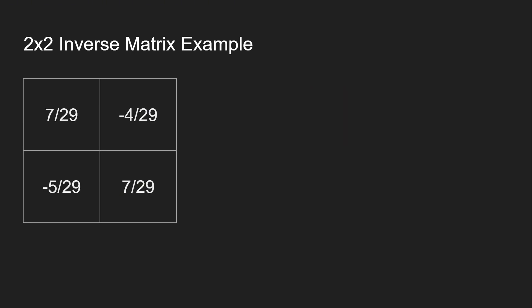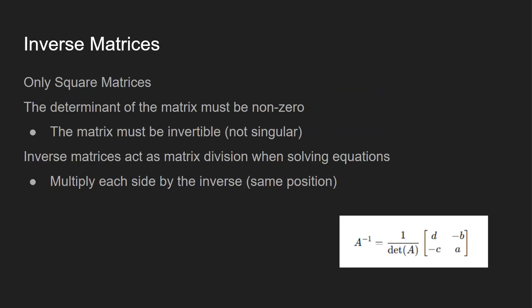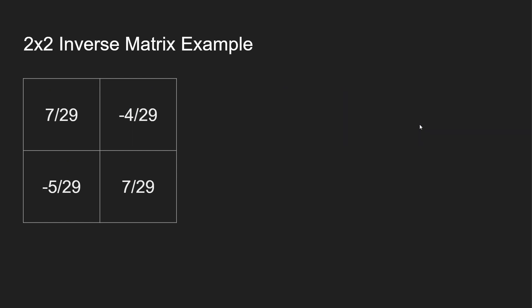Then all you have to do is apply what I just showed you. We swap technically a and d — in this case they're both seven, so no difference. And then we negate b and c, and divide by 29 because the determinant is 29. And that is going to be our final answer for the inverse. So again: swap, negate, one over determinant. We found the determinant to be 29, so we multiply one over 29 for each element, negate b and c, and swap a and d.